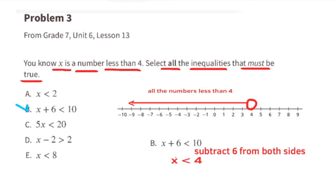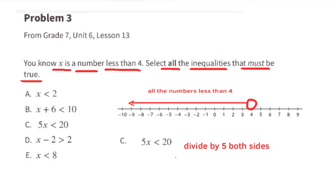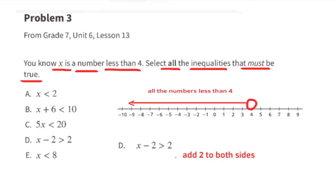Option c: 5x is less than 20. Divide both sides by 5 and you're left with x is less than four, and that's true because the original inequality is x is less than four.